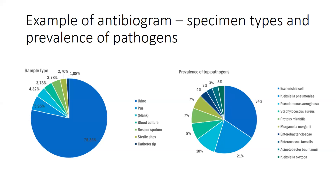This is an example of a general antibiogram where more than a single sample type has been included. The graph on the left shows a summary of what samples made up this antibiogram — the bulk were urine samples at 78 percent, with a very small proportion of blood culture, respiratory, catheter tips, and others. This is typically like an antibiogram for a urology unit. The graph on the right illustrates the top pathogens: E. coli and Klebsiella pneumoniae are common, unsurprisingly, with Pseudomonas aeruginosa as the third common pathogen.